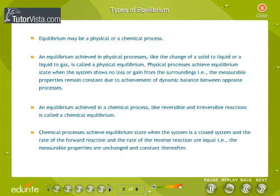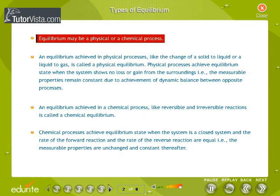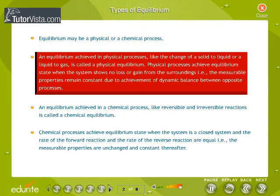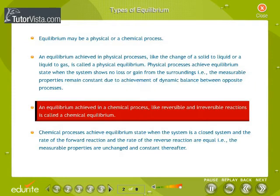Types of Equilibrium. Equilibrium may be a physical or a chemical process. An equilibrium achieved in physical processes, like the change of a solid to liquid or a liquid to gas, is called a physical equilibrium. Physical processes achieve equilibrium state when the system shows no loss or gain from the surroundings, i.e., the measurable properties remain constant due to achievement of dynamic balance between opposite processes.